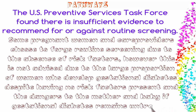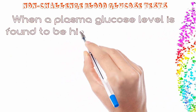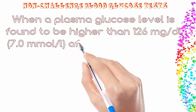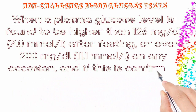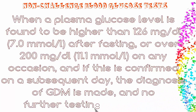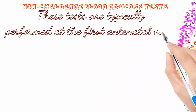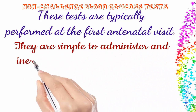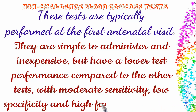Forgoing screening is not advised due to the large proportion of women who develop gestational diabetes despite having no risk factors, and the dangers to the mother and baby if gestational diabetes remains untreated. For non-challenge blood glucose tests, when a plasma glucose level is found to be higher than 126 mg/dL (7.0 mmol/L) after fasting, or over 200 mg/dL (11.1 mmol/L) on any occasion, and this is confirmed on a subsequent day, the diagnosis of GDM is made and no further testing is required. These tests are typically performed at the first antenatal visit. They are simple to administer and inexpensive, but have lower test performance compared to other tests, with moderate sensitivity, low specificity, and high false positive rates.